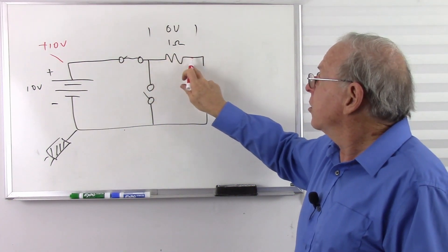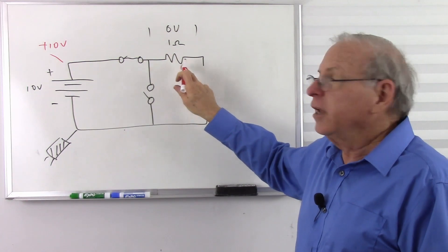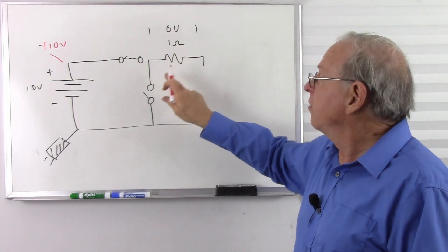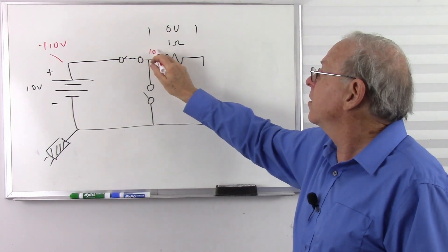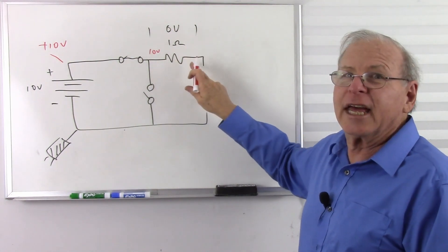We come across this resistor. How much current is flowing through it? Zero. So how much voltage do I have across it? Zero. So I start with 10 volts and I lose nothing.